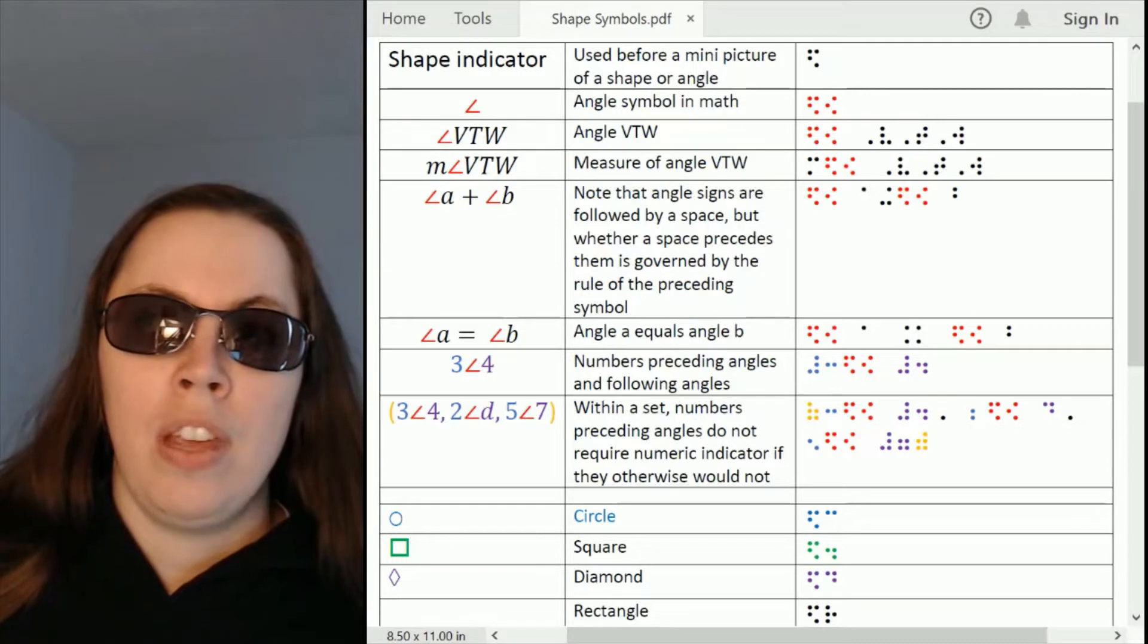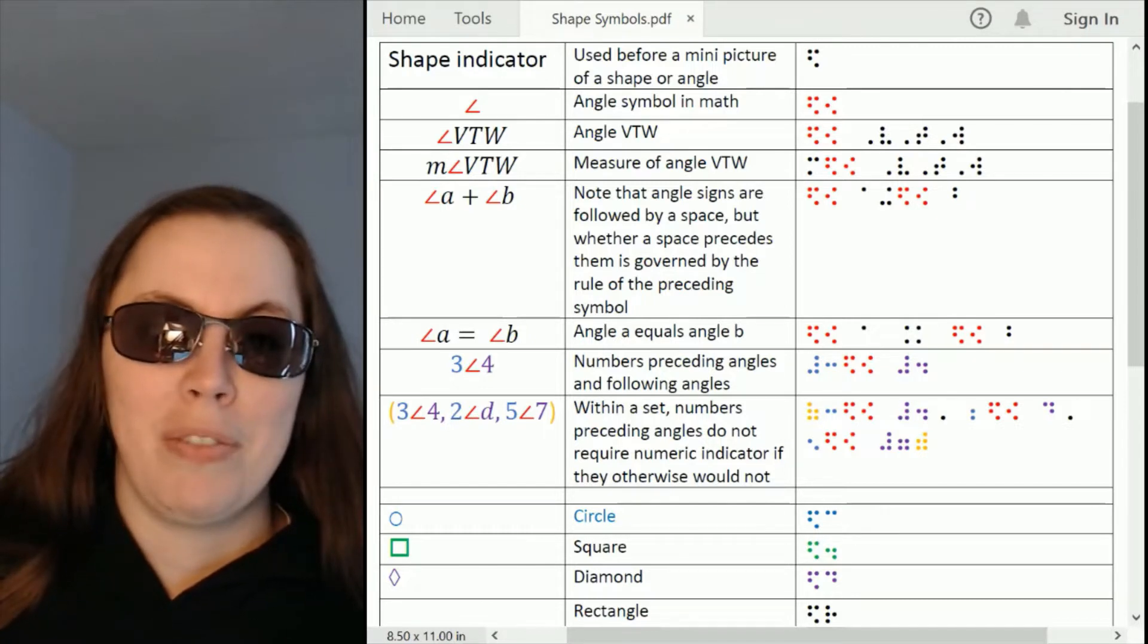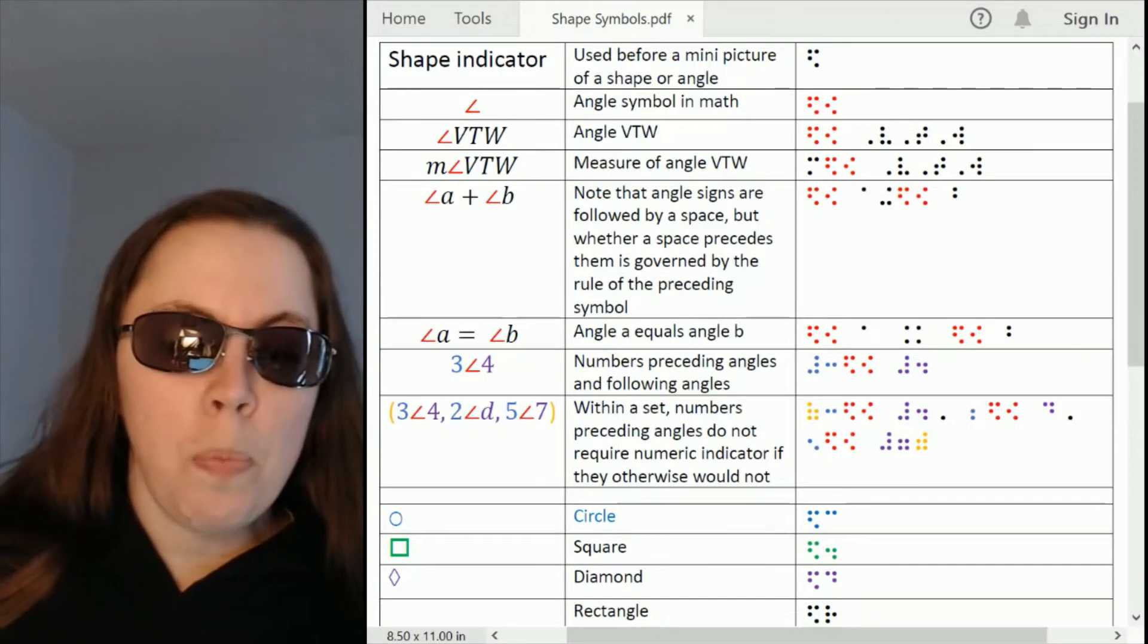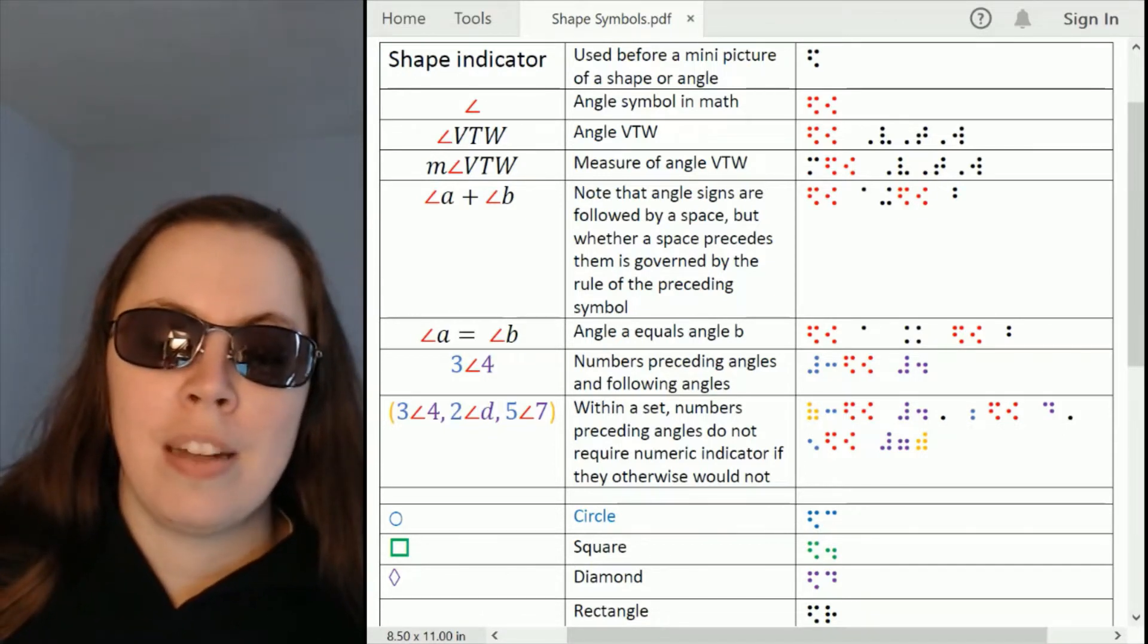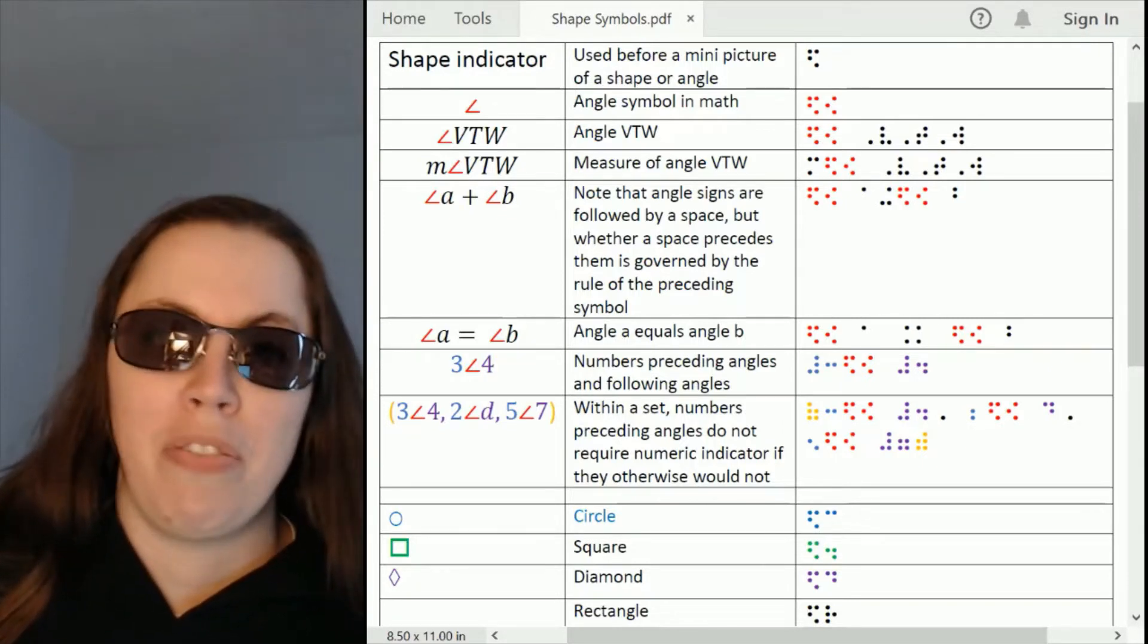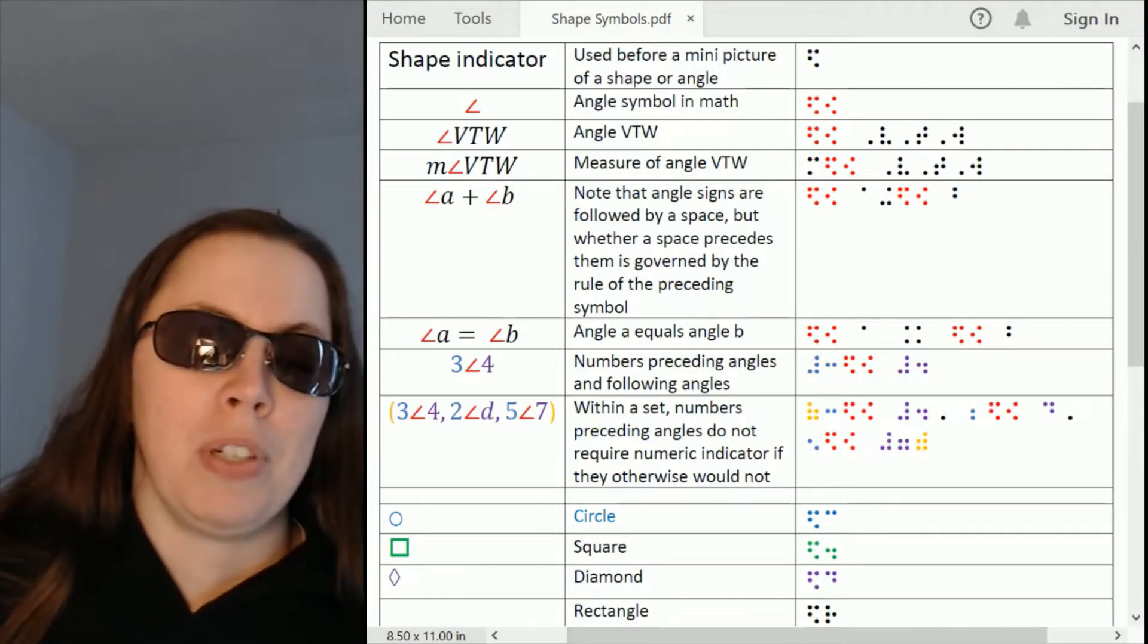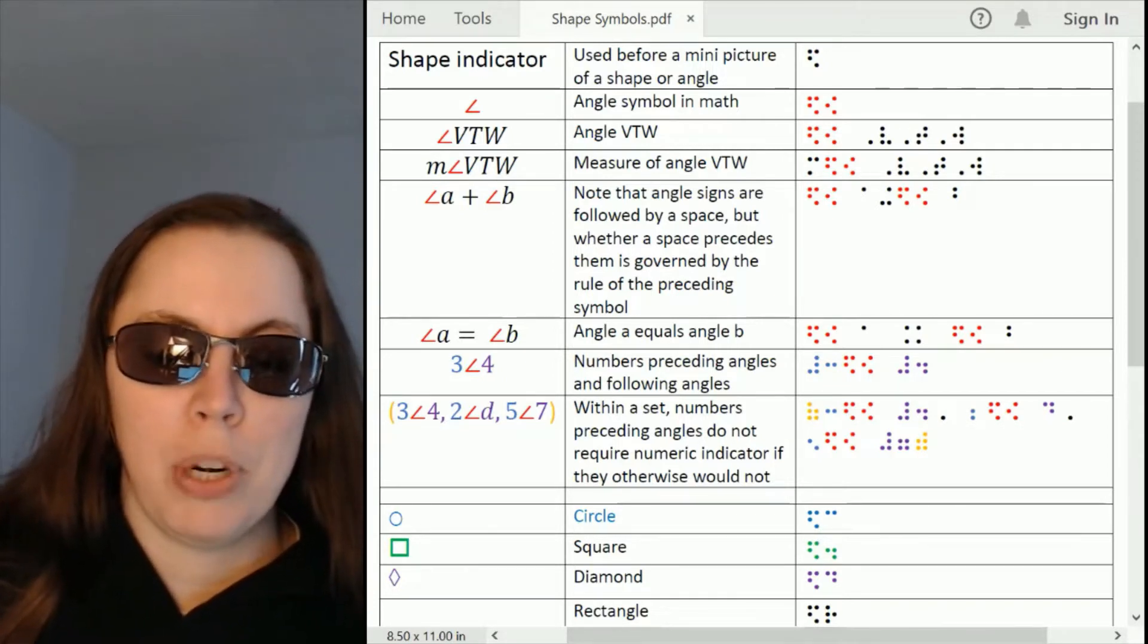Today with the common use of strand curriculum where students do a little bit of arithmetic, a little bit of geometry, and a little bit of algebra around and around again at every grade level, you'll even see some of these symbols be introduced very young, maybe in kindergarten, definitely by third grade you'll see students using shape symbols, maybe even angle symbols pretty early.